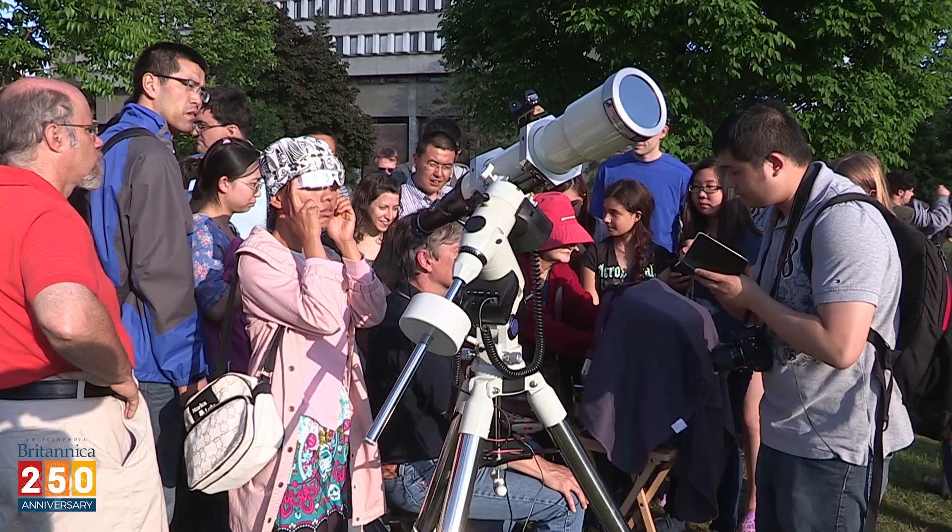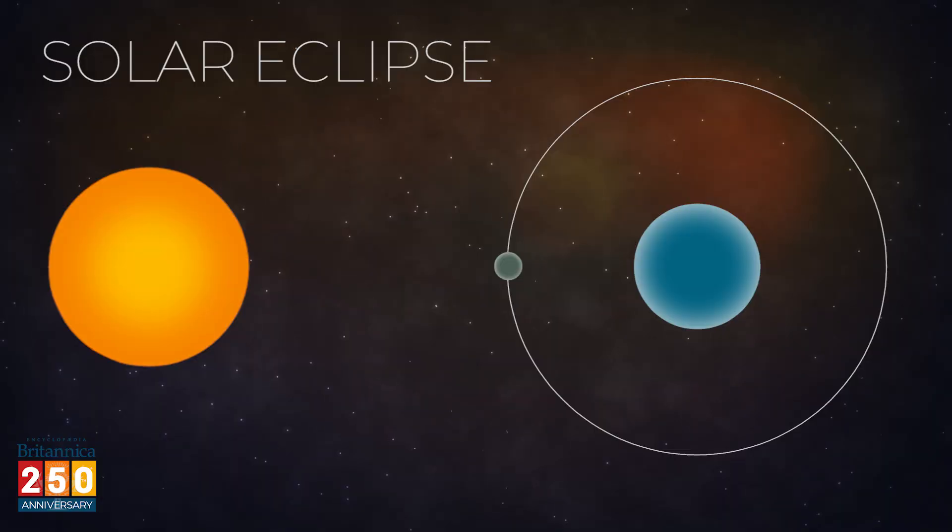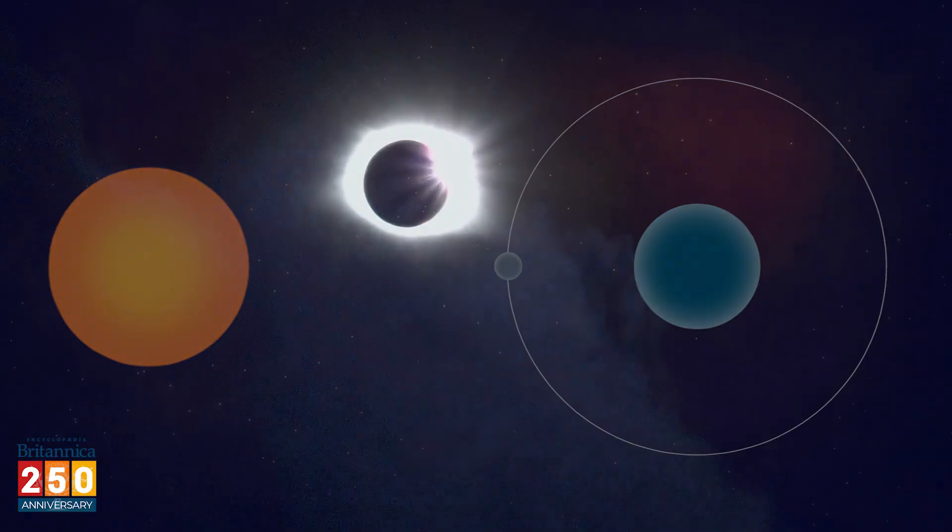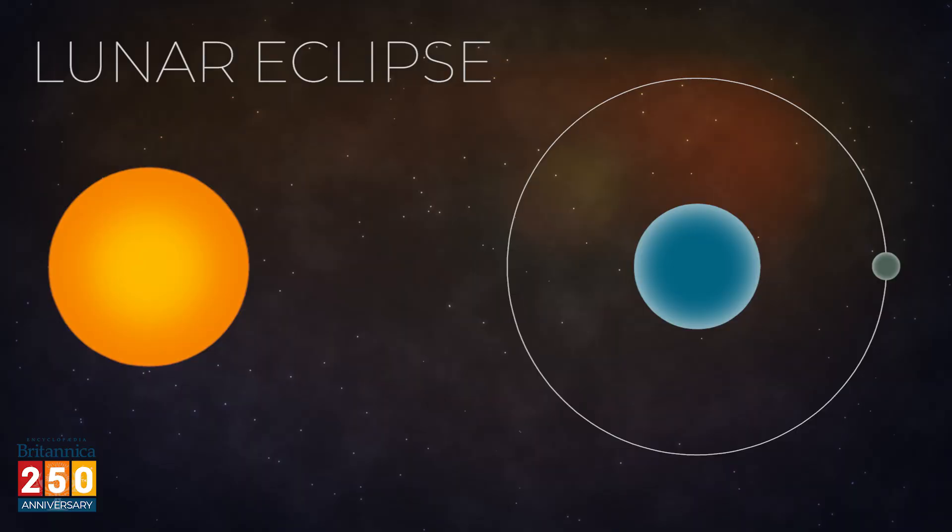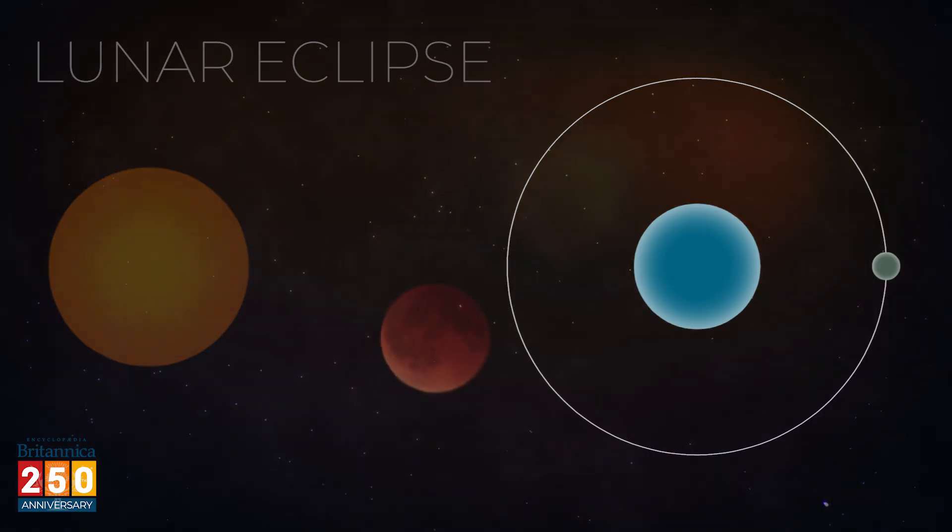So next time you hear about an eclipse on the news, you'll know that in a solar eclipse, the Moon passes in front of the Sun and casts its shadow on the Earth. In a lunar eclipse, the Earth passes between the Sun and the Moon, casting its shadow on the Moon.